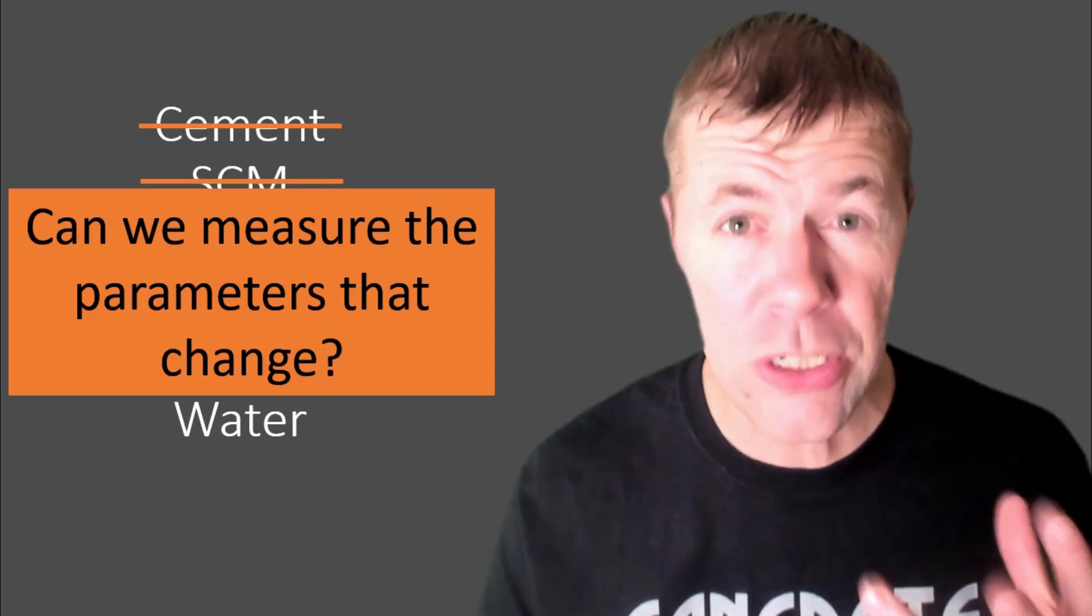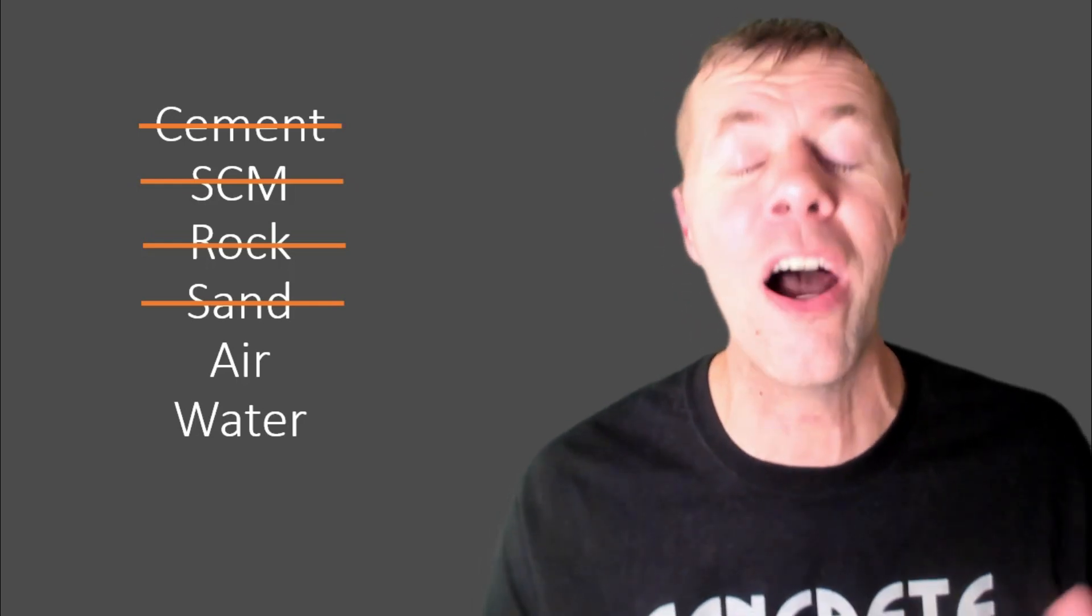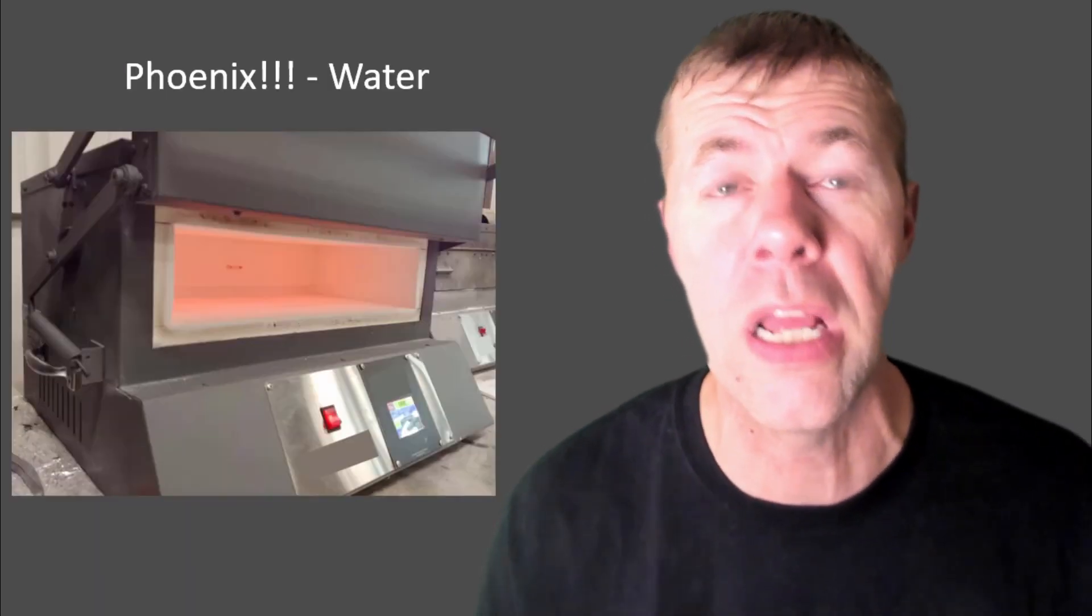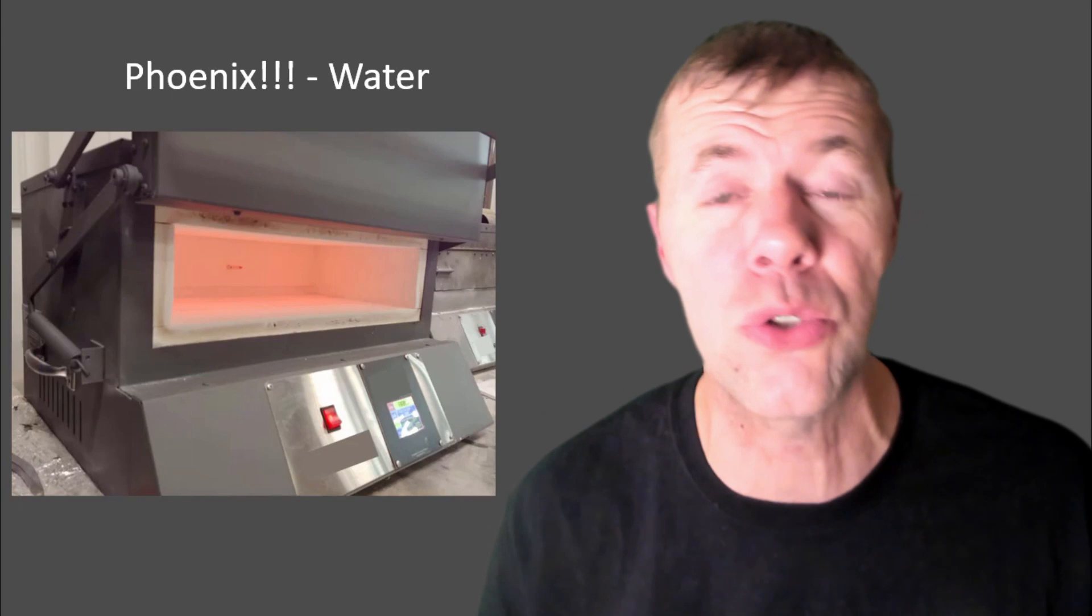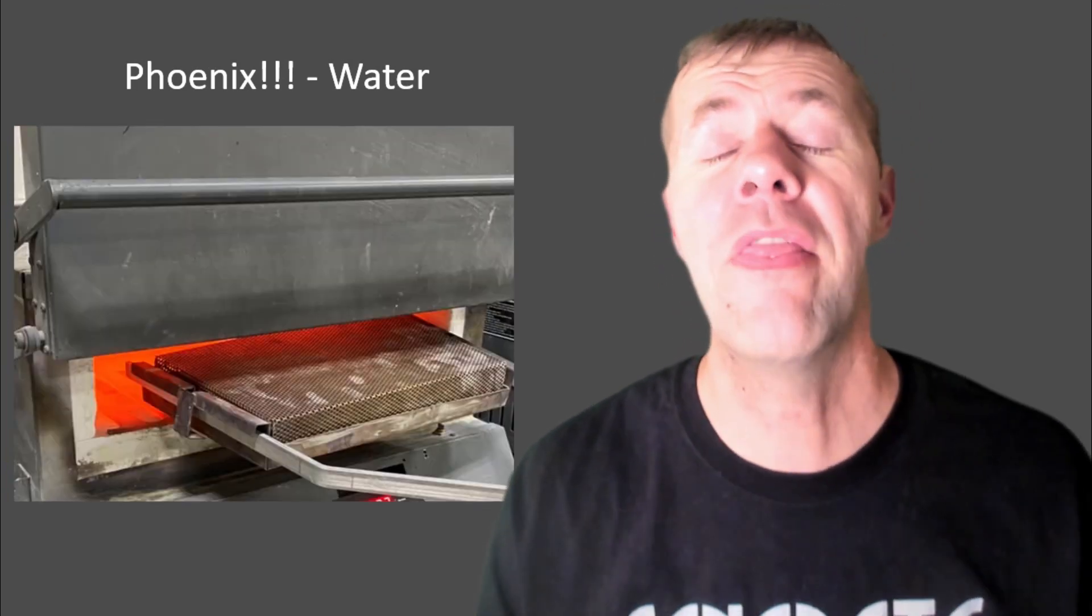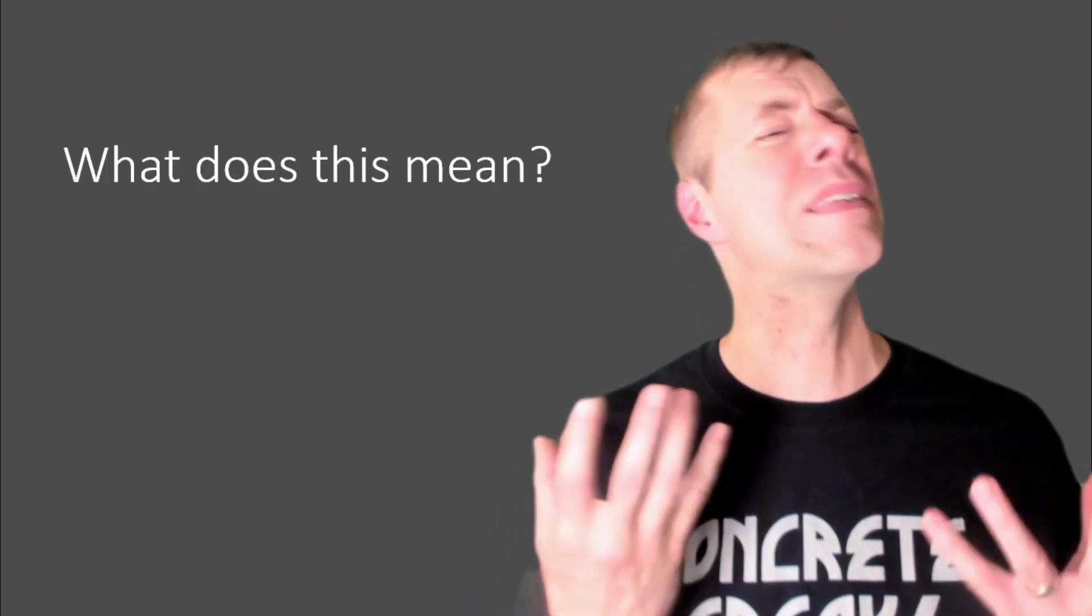But can we measure these two parameters that change? Can we measure the air content and the water content? Of course we can. For the air content, this is the super air meter. You could use a normal air meter, and people could use that to measure the air content of the concrete. And you can use the Phoenix, this sweet kiln, an oven that pulls all the water out of the concrete, and that helps you measure the water in the concrete. And there we are taking a sample in and out. That's how this sweet kiln works.